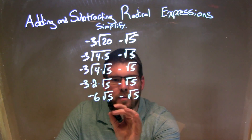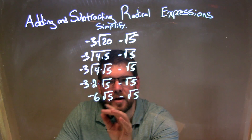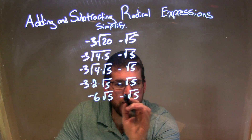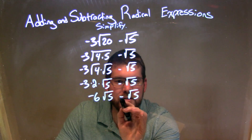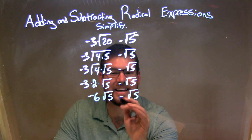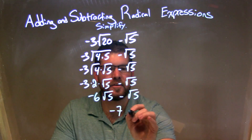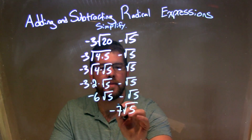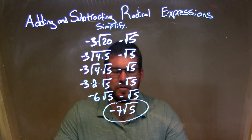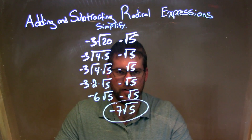But now we have the same square root, so we look to the number that's in front of them. We have negative 6, and remember, there's a 1 right there. So negative 6 minus 1 is negative 7. We then just bring down the square root of 5. Negative 7 times the square root of 5 is the final answer.